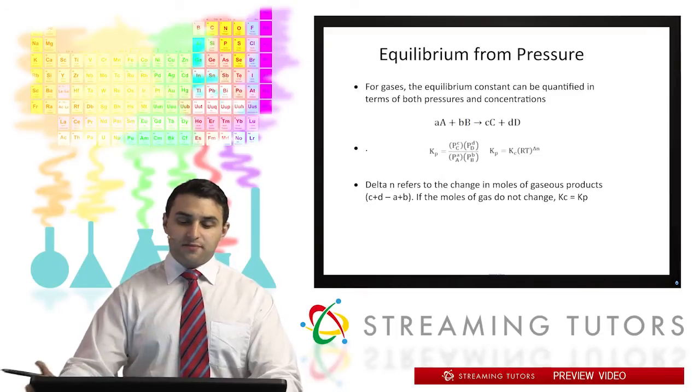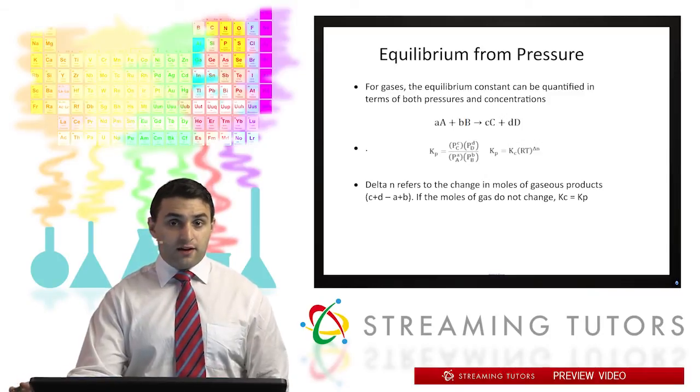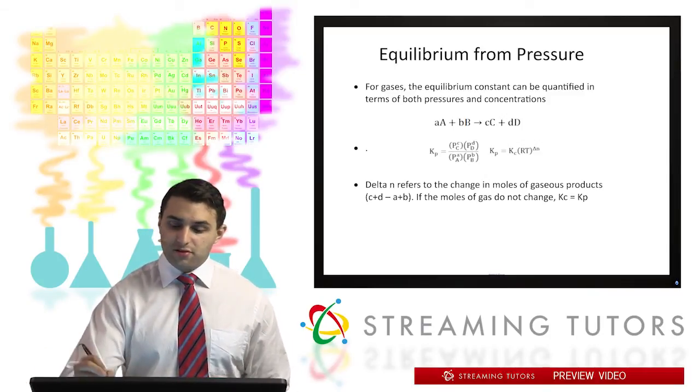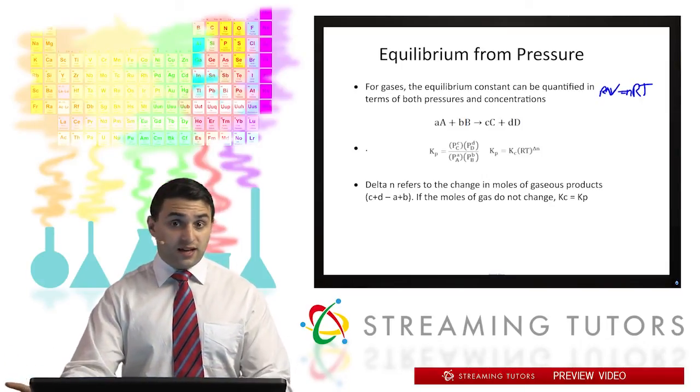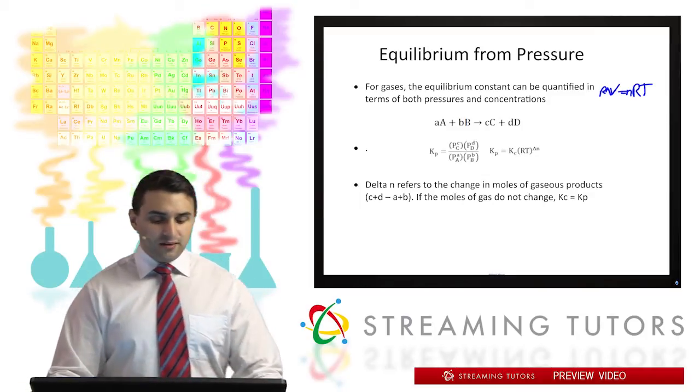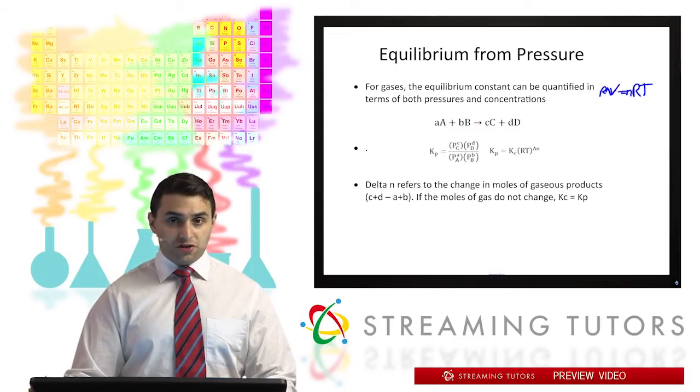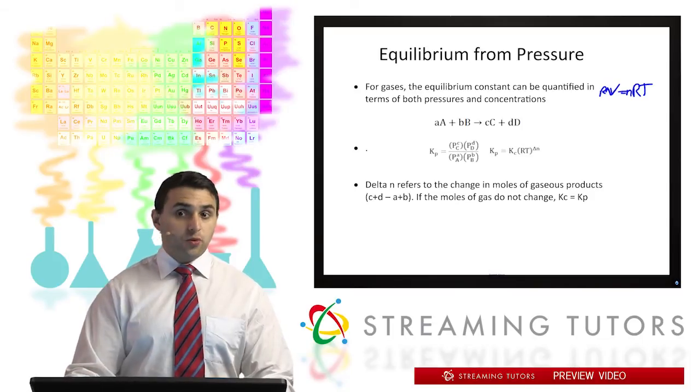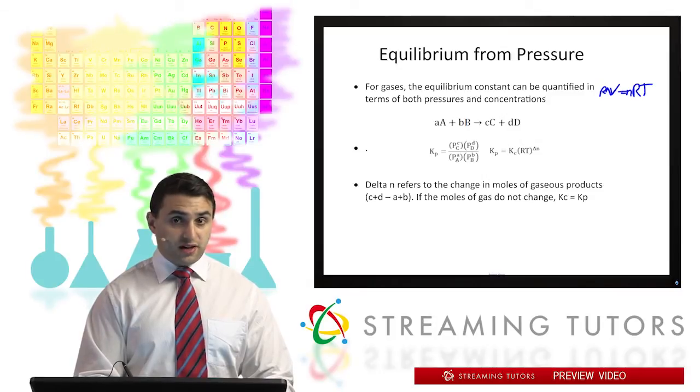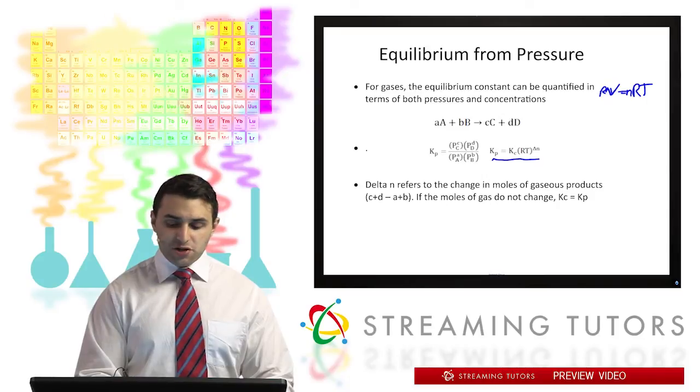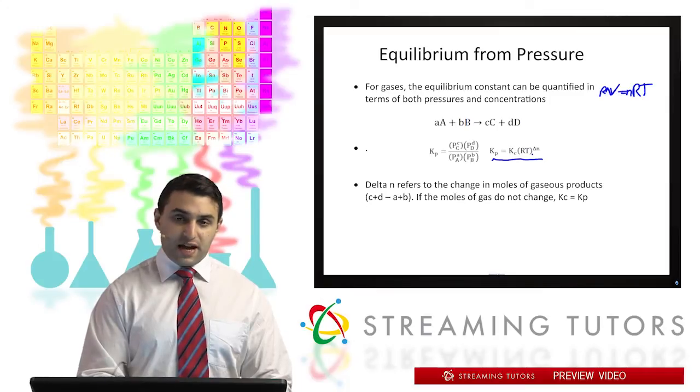So some other things about the equilibrium constant. We can also get the equilibrium constant from pressures in the same way that we can talk about concentrations. We could theoretically interconvert between them with the ideal gas law, PV equals nRT from last semester. So the equilibrium pressure expression from pressure is pretty much the same thing, except now we're just using partial pressures instead of concentrations. The one important thing to note is that we can interconvert between what's known as Kp for pressure and Kc for concentration using this equation over here.